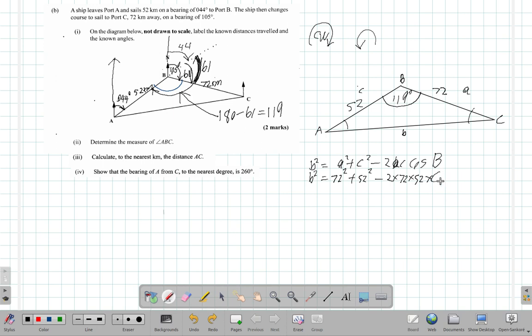No, 2 times a. This should have been 2ac, not b. So 2 times 72 times 52 times cosine of angle B, cosine of 119. So b squared equals... I have 72 squared.